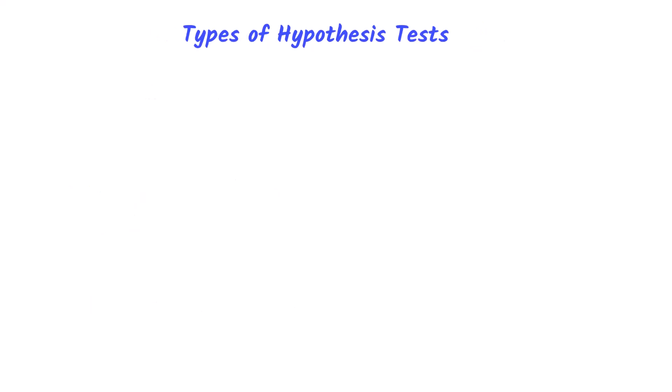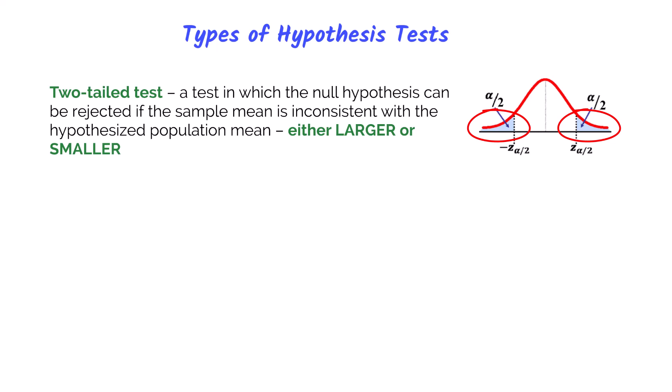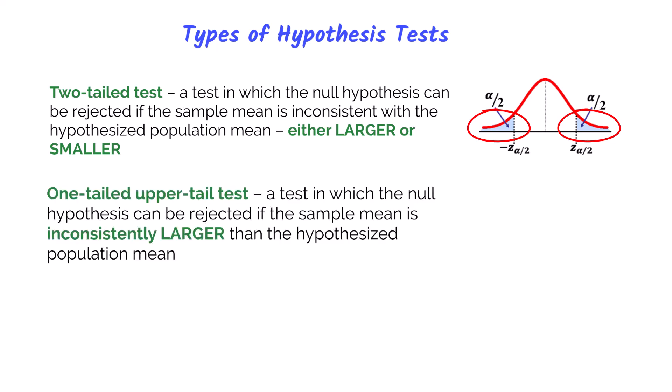Within hypothesis testing, there are a few types you'll commonly see. The first is a two-tailed test, where the null hypothesis will be rejected if the sample mean is much larger or much smaller than the hypothesized population mean. Recall from chapter 8 we learned about confidence intervals that focus on the lower and upper limits around a point estimate. With hypothesis testing, we are focused on the outer tails. A one-tailed upper test is where the null hypothesis will be rejected if the sample mean is much larger than the hypothesized population mean — it falls out in the right tail.